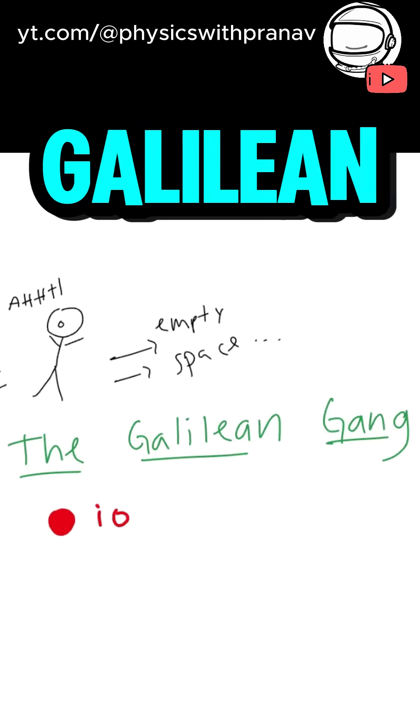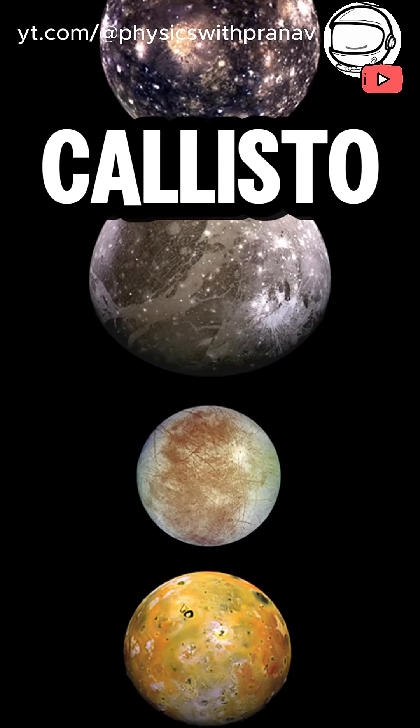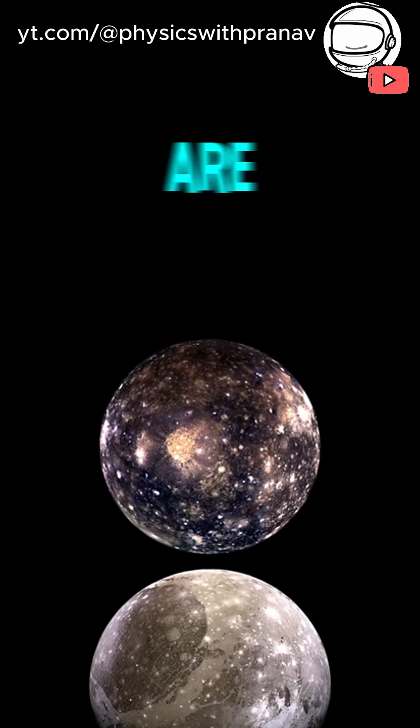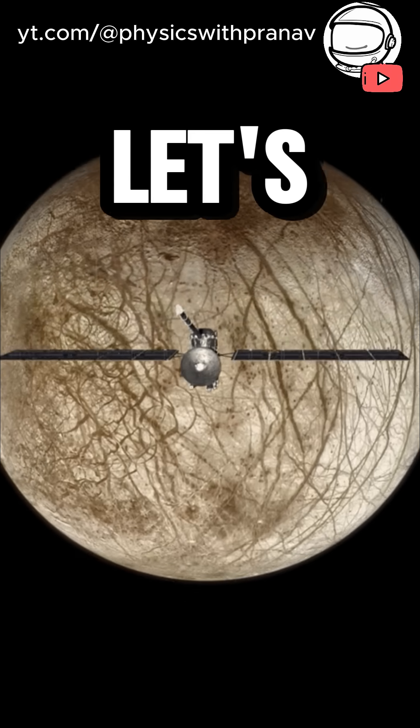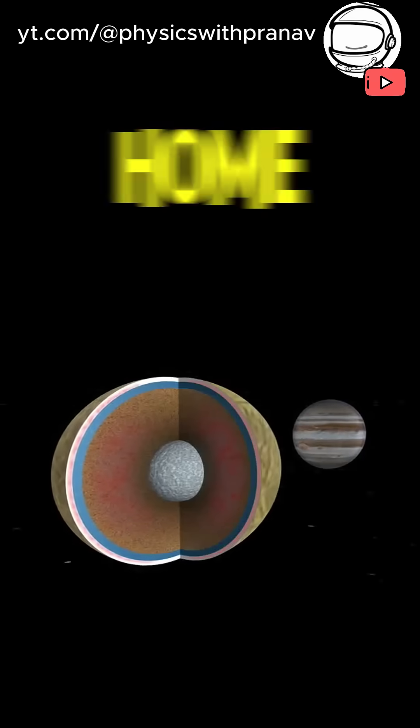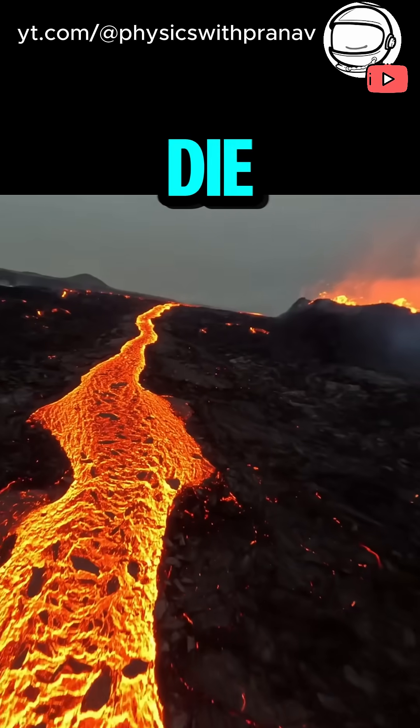Say hello to the Galilean moons. Io, Europa, Ganymede, and Callisto. These four are big, bold, and scientifically juicy. Let's check out each one, and see if we can call them home, or see if we can at least not die immediately.